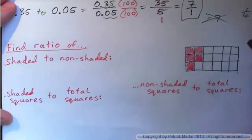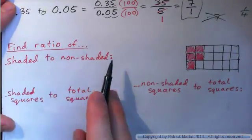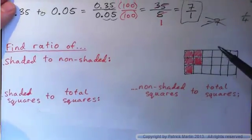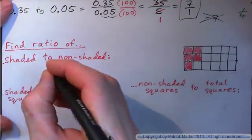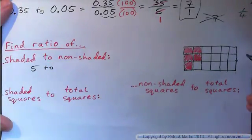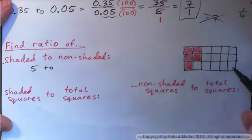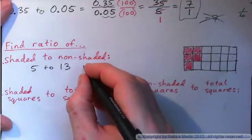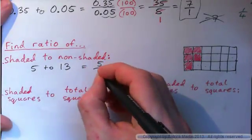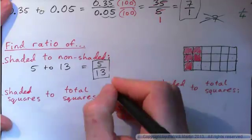Let's have a look at this rectangle. Some squares are shaded, some are not. Find the ratio of shaded to non-shaded squares. How many shaded squares? One, two, three, four, five — five shaded squares. Non-shaded: counting them out — thirteen non-shaded squares. So the ratio is five to thirteen. Write that as a fraction: five over thirteen. Put that in lowest terms — it's already in lowest terms; you can't break it down any further.